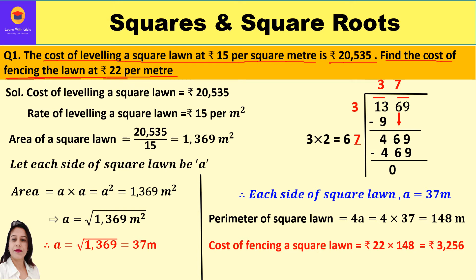To find the perimeter we require the side — the length of each side of the square lawn. To find each side we require the area. We are given the cost of leveling — rupees 20,535 — and the rate of leveling — rupees 15 per square meter. So dividing cost by rate gives the area: 20,535 ÷ 15 = 1369 square meters.